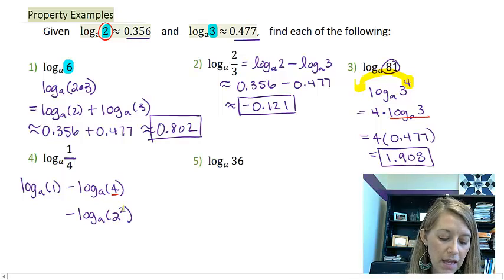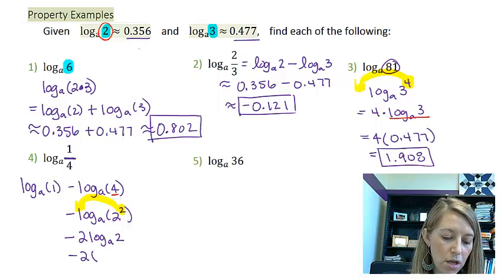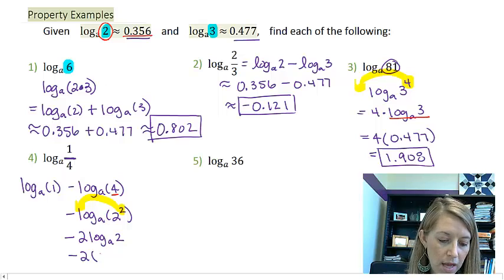Well, then I can pull my power down in front. And so that gives me log base A of 1 minus 2 log base A of 2. And so now I can make my substitution of log base A of 2 is 0.356.